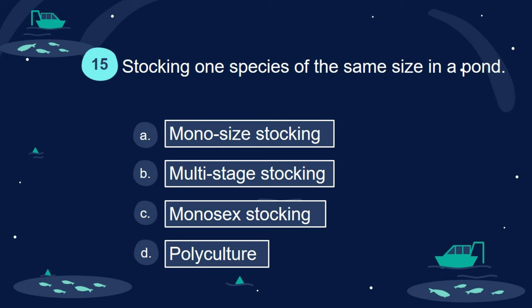Question 15. Stocking one species of the same size in a pond: A. Mono-size stocking. B. Multi-stage stocking. C. Mono-sex stocking. D. Polyculture.